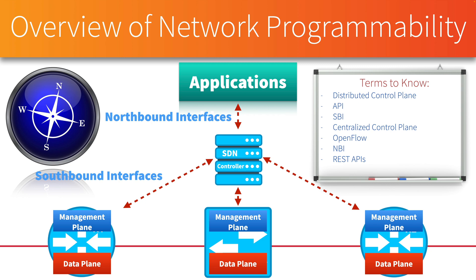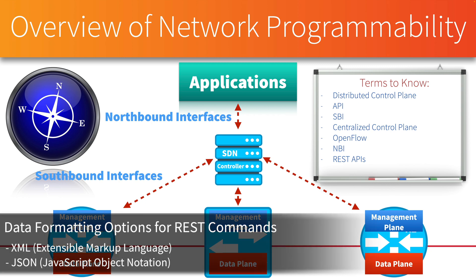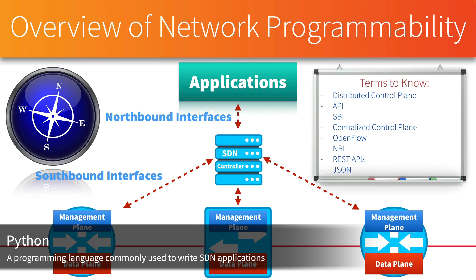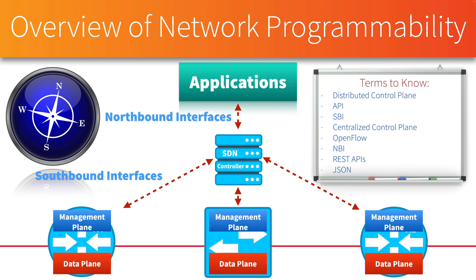The information being sent by these HTTP verbs has to be in a certain format. One format is XML — Extensible Markup Language. Another very popular one is JSON, which stands for JavaScript Object Notation. With this infrastructure, we can have applications written in a programming language like Python to send JSON-formatted commands inside of HTTP verbs using those REST APIs down to the controller to express our intent. The controller then takes our intent — which might be to secure a particular type of traffic or give quality of service treatment to another — and sends appropriate commands down to those network devices. No longer do we have to go from device to device with a console cable.